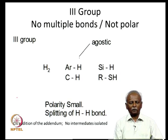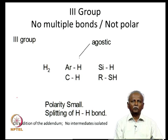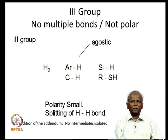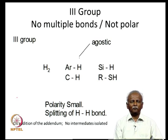In the third group we have no multiple bonds nor polar groups. The first group had polar groups; the second group had multiple bonds; but the third group has neither. This is typified by hydrogen, aromatic C-H, Si-H, or S-H bonds, where the polarity is typically very small. Since we have substrates which are not very electronegative, reductive elimination — the reverse reaction — would be an extremely facile process. In fact, it is very difficult to carry out oxidative addition on these substrates and the reverse reaction is always favorable.